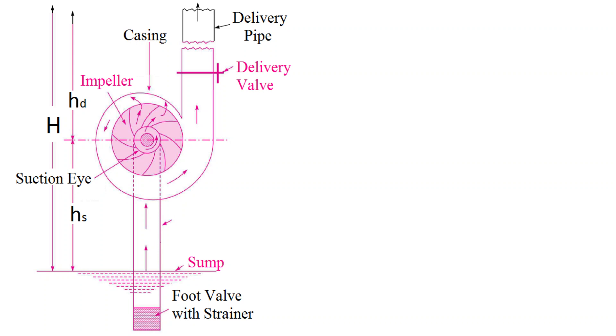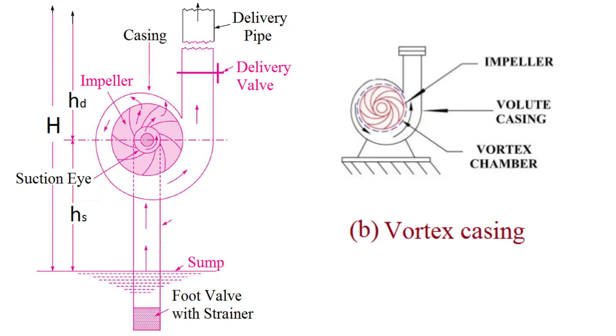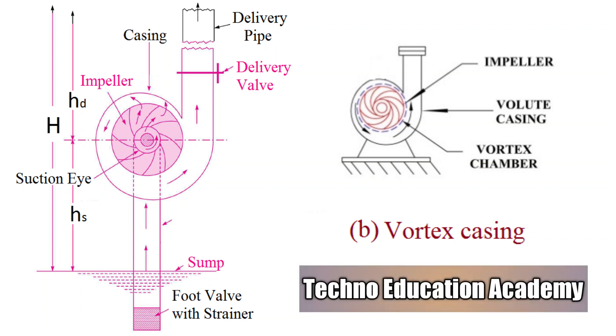Second one type of casing is vortex casing or whirlpool chamber type. This is an improved type of volute chamber. Here an annular space is provided between the volute and impeller forming a combination of spiral and circular chamber. The arrangement reduces eddies to a considerable amount and improves the performance of the pump.